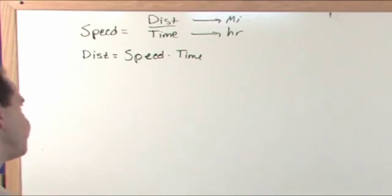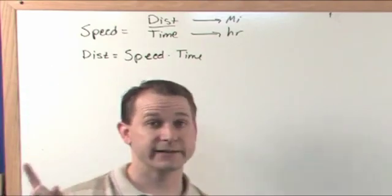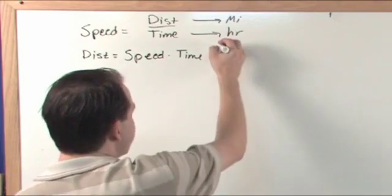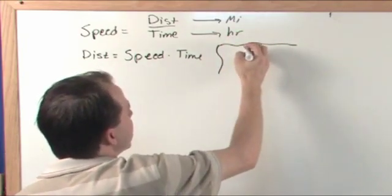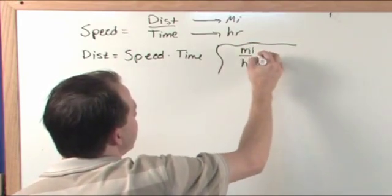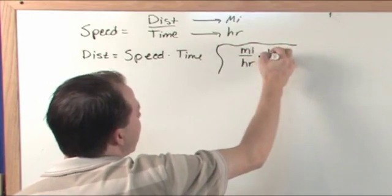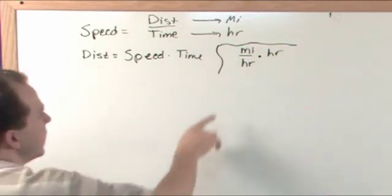And I'll give you one aside that's very helpful as you solve these problems and other problems. The units of speed is, let's just say, miles per hour. And if you multiply by the time, which is in hours, you see what's happening here. If you look at the units...